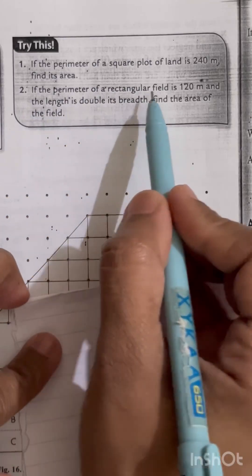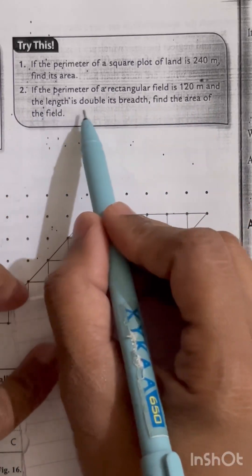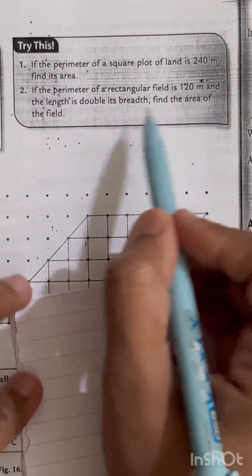If the perimeter of a rectangle field is 120 meters and the length is double its breadth, find the area of the field.